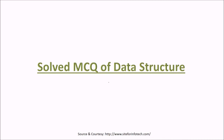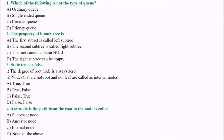Let us take a few more multiple choice questions in data structure. The first one is: which of the following is not a type of queue? You have ordinary queue, circular queue, and priority queue. There is nothing called a single ended queue. So the answer will be B.